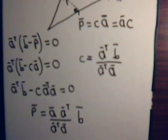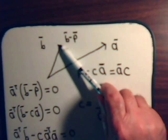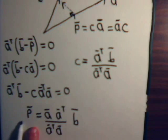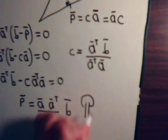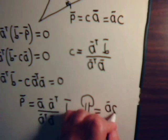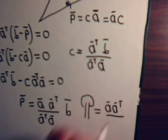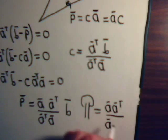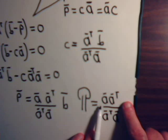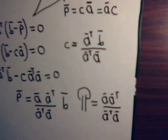The projection P equals vector A times scalar C. This quantity right here — A times (A transpose B) divided by (A transpose A) — is called the projection operator. This is what vector B gets multiplied by to give the projection vector P. We write: P equals (A · A transpose) divided by (A transpose A) times B. Note that A transpose A is just a number — the magnitude of vector A squared — so A · A transpose must be a matrix.